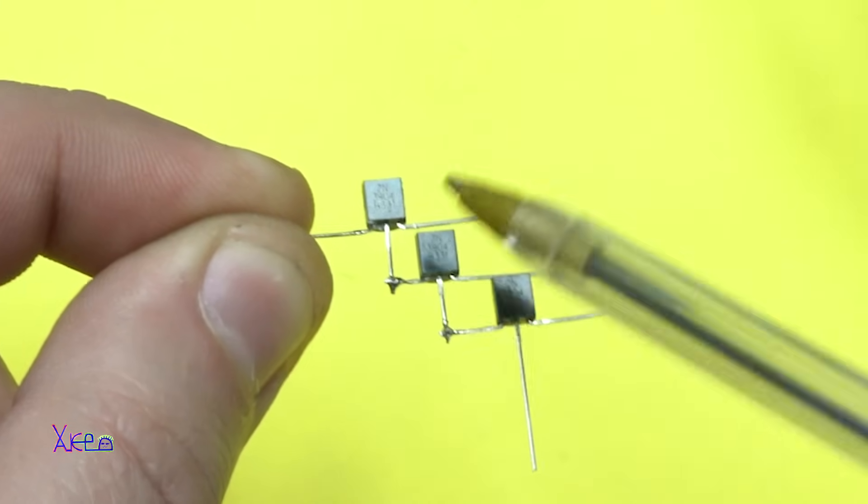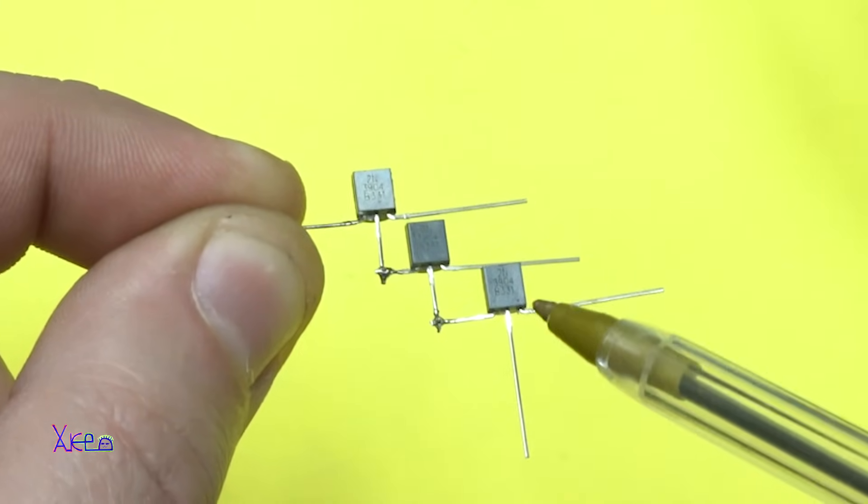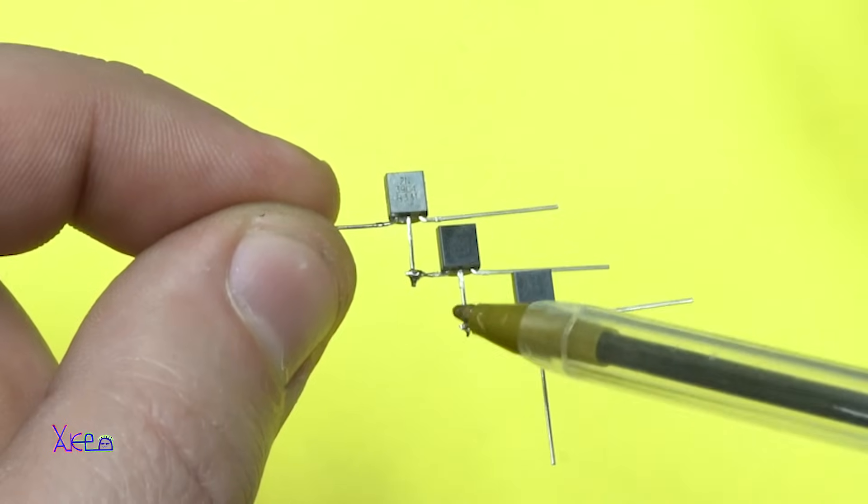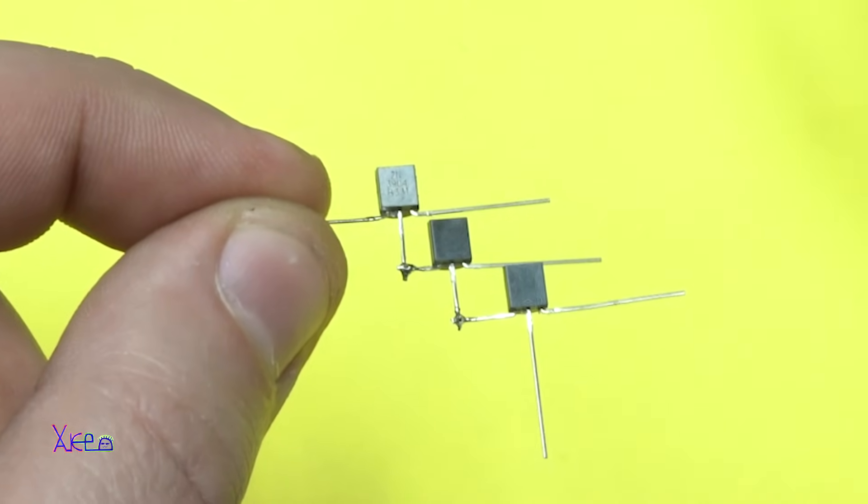So far we have 3 NPN transistors. In my case I'm using 2N3904, connected base with emitter, base with emitter. Next step.